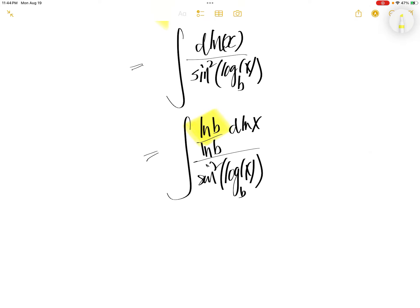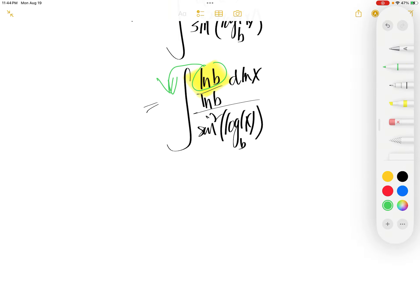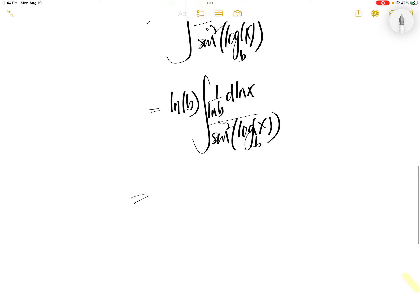This piece ln b, we can take it out of the integral. And then we are left with ln b, d ln x, and then 1 over ln b divided by sine squared of log x to the base b.